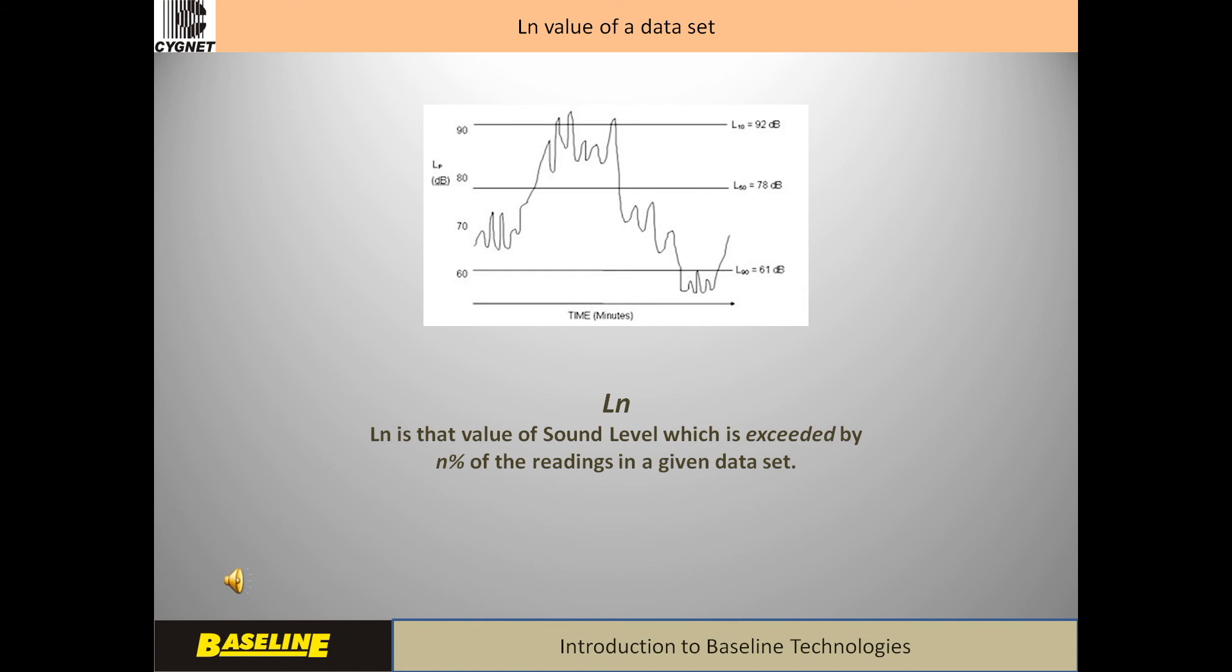This is best illustrated with an example. Suppose, several readings of dB taken at fixed intervals were tabulated in decreasing order of magnitude. Then, Ln would be the reading that is obtained after rejecting the highest n% readings of the total readings. The figure which is used often is L10 or L20. Ln is often used in assessing noise generated by projects in the vicinity of residential areas, like metro rail construction.